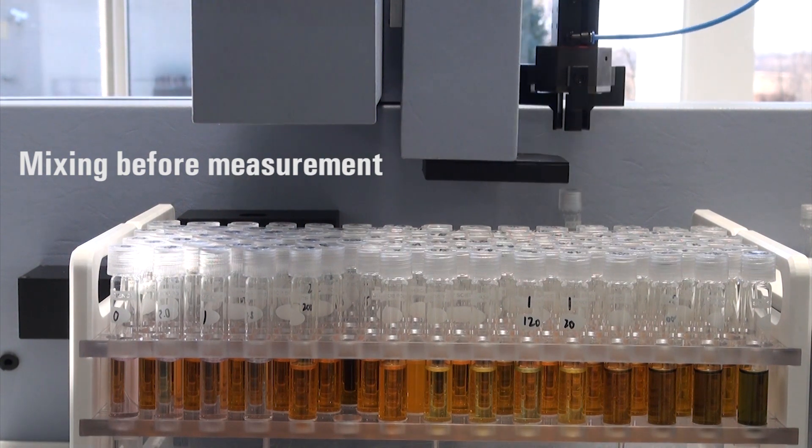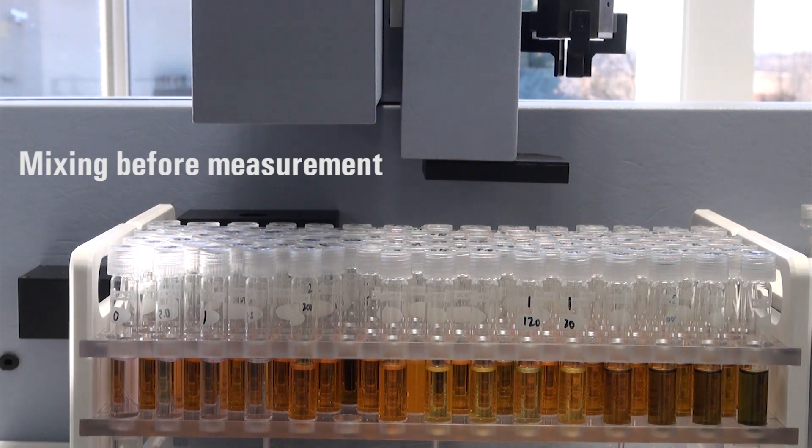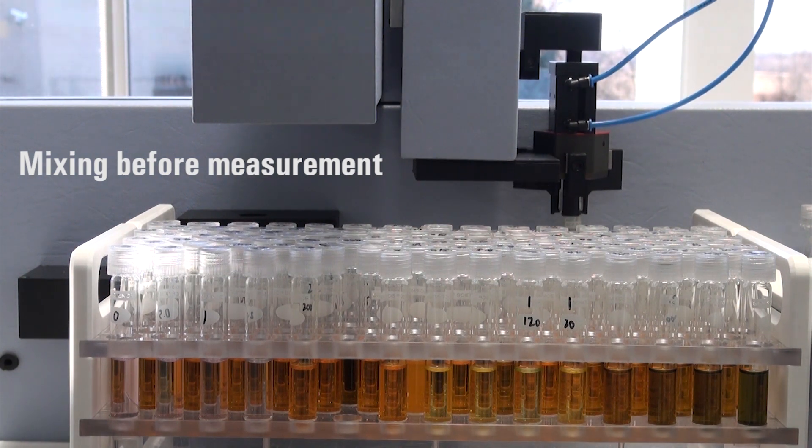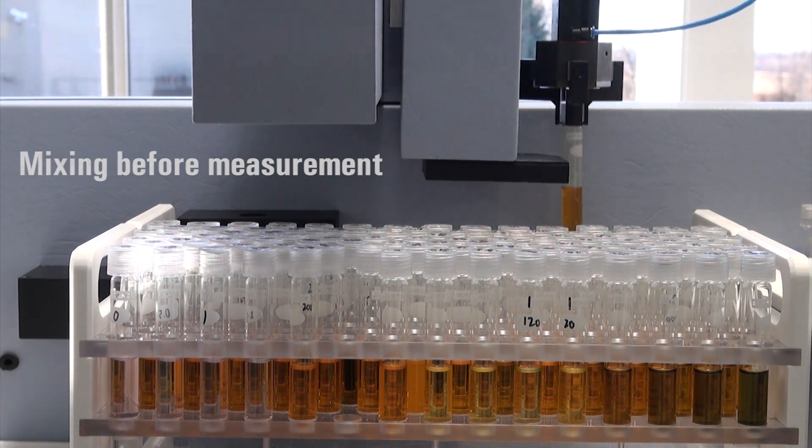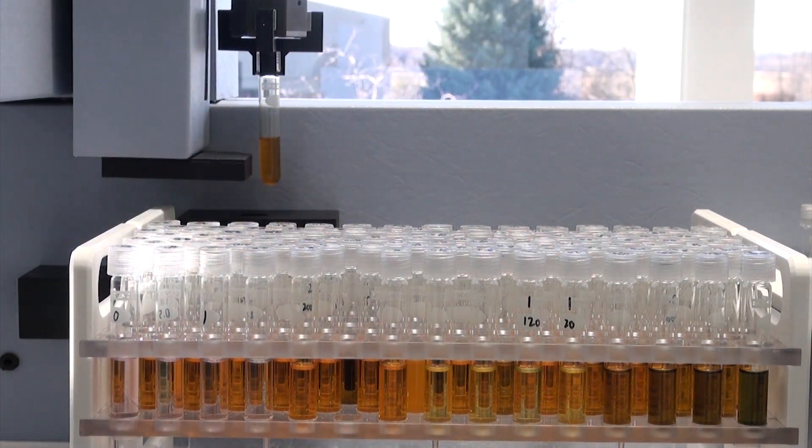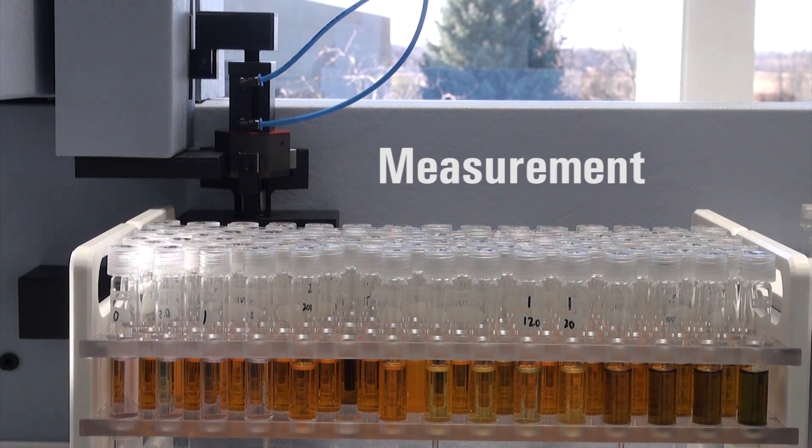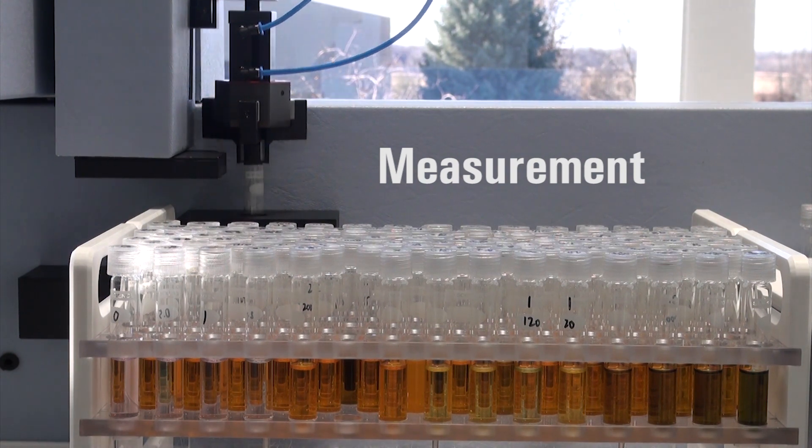COD tubes produced by SCP Science are optically clear for measurement accuracy. A method can be built to analyze low dichromate and high dichromate range samples simultaneously. Use the turbidity detection option in order to perform quality control on each sample.